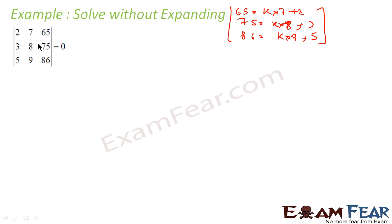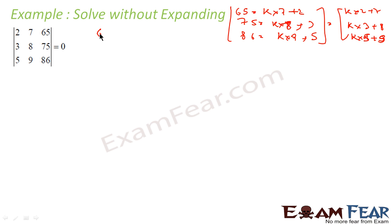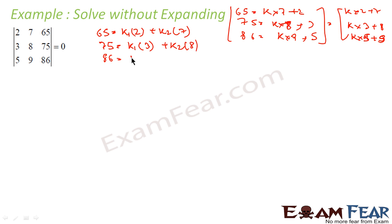Or the other way around — we can write in the form k1·2 plus k2·7. For 75, we write it as k1·3 plus k2·8, and for 86 as k1·5 plus k2·9. If we can write in this fashion, we can break this into two matrices.